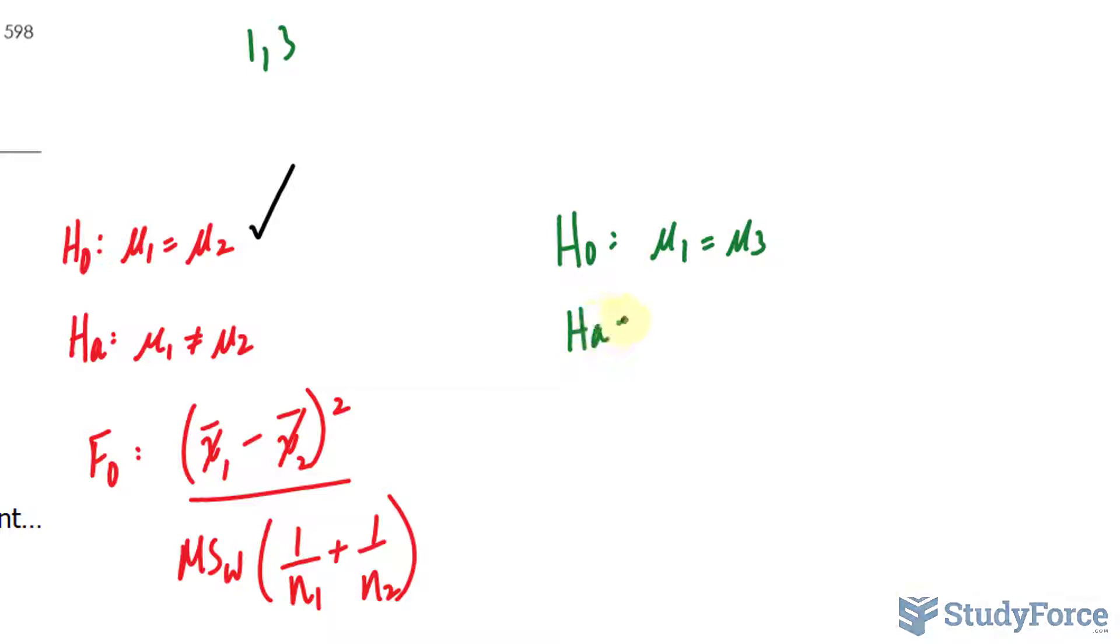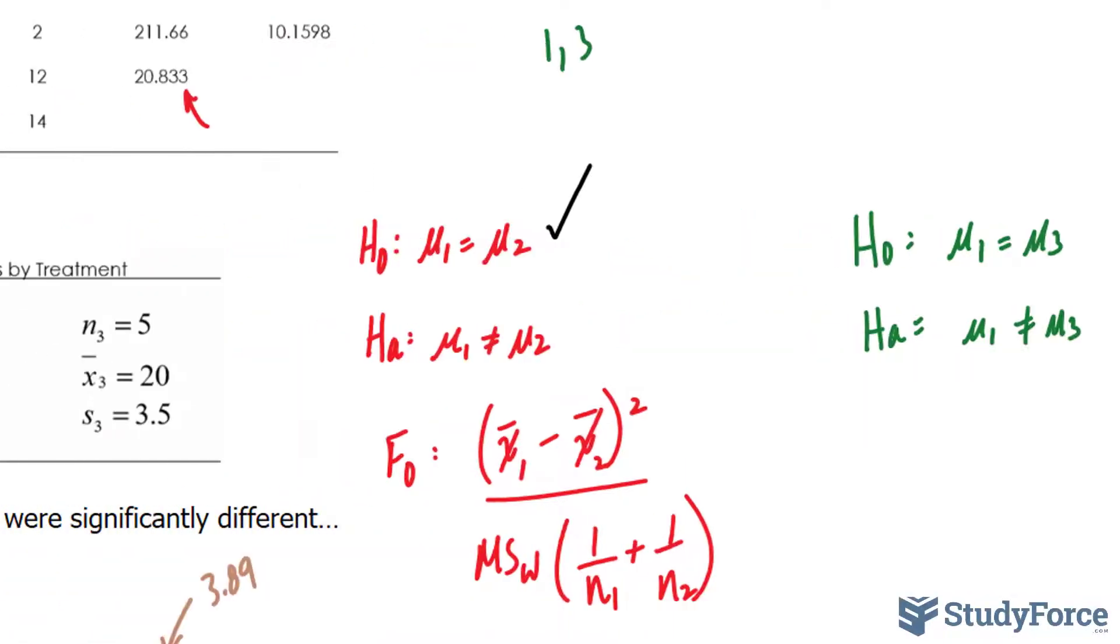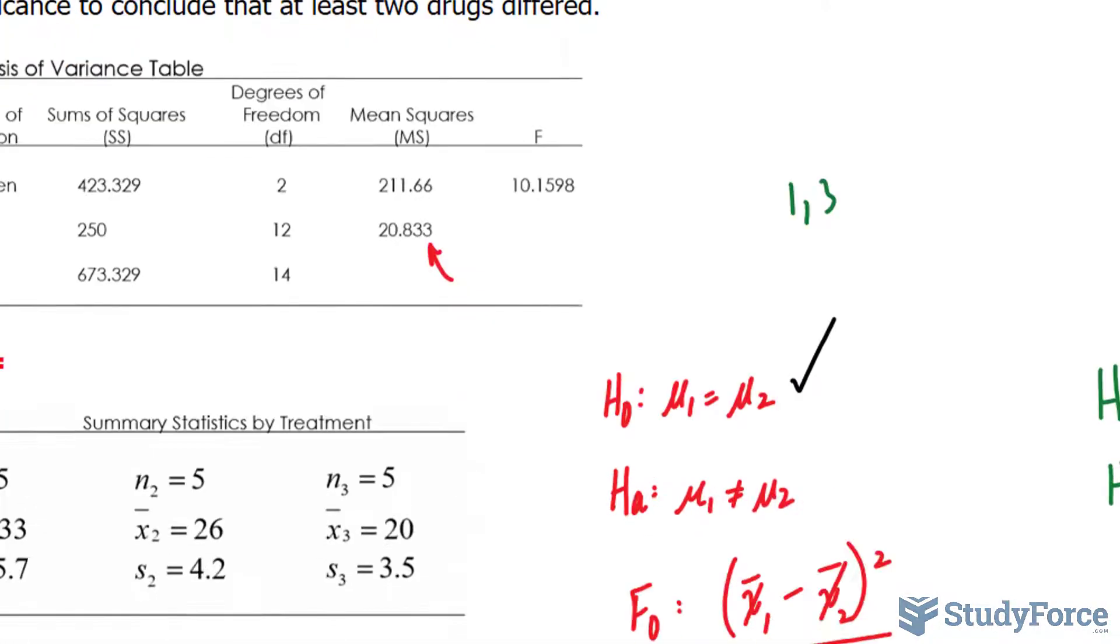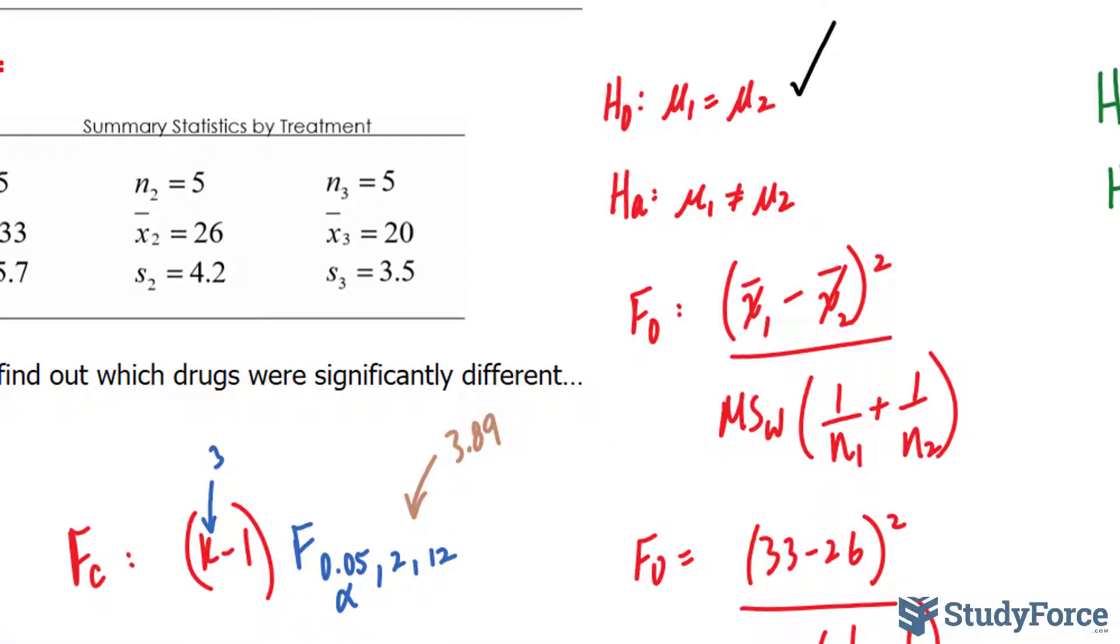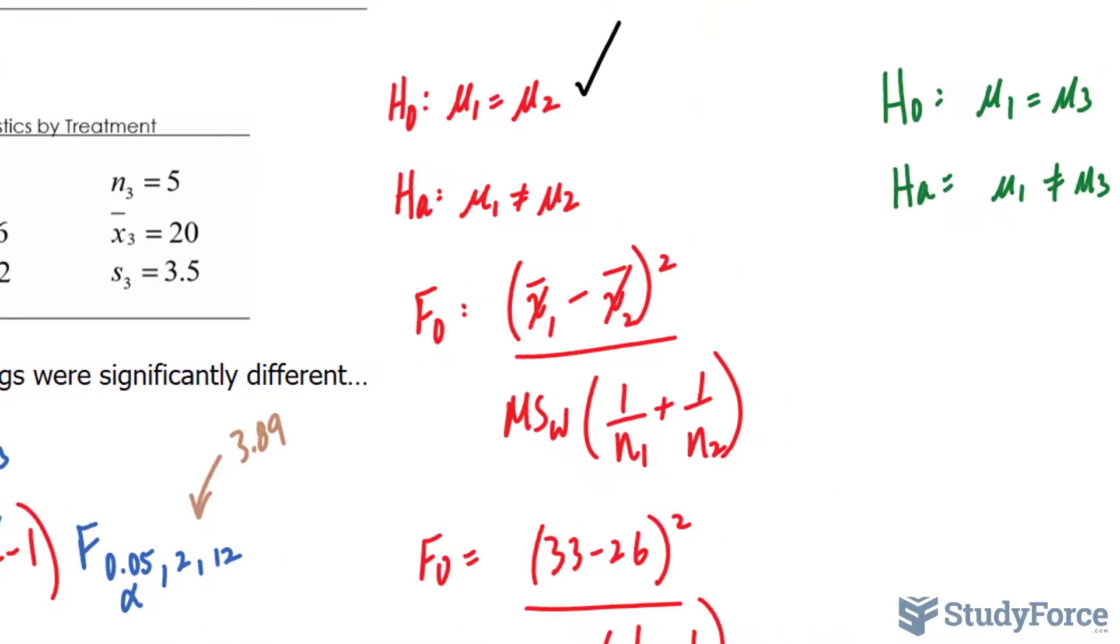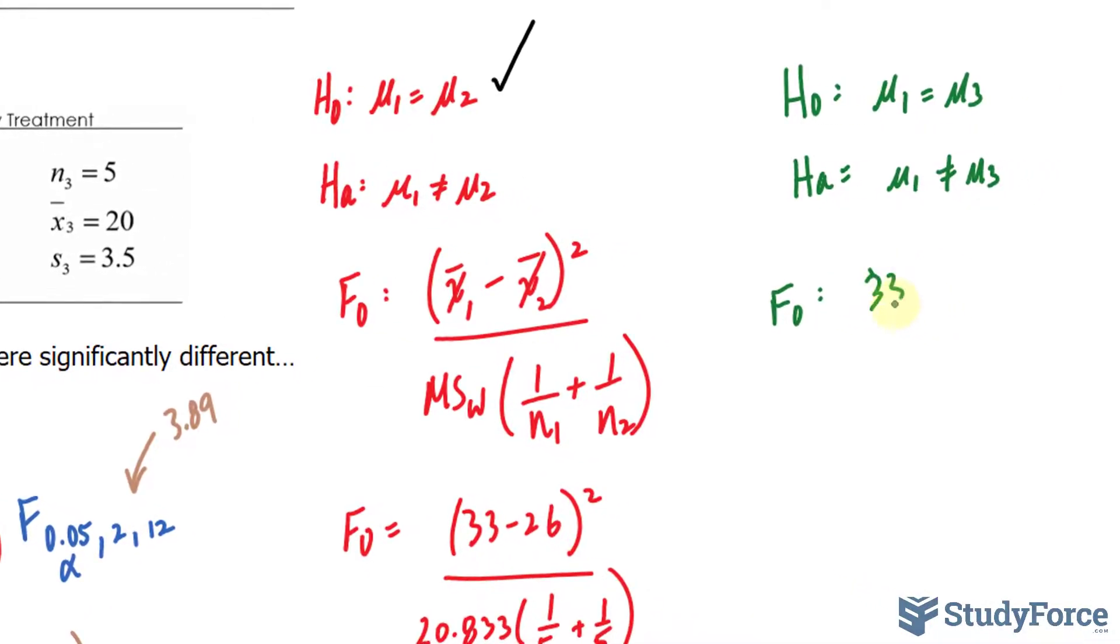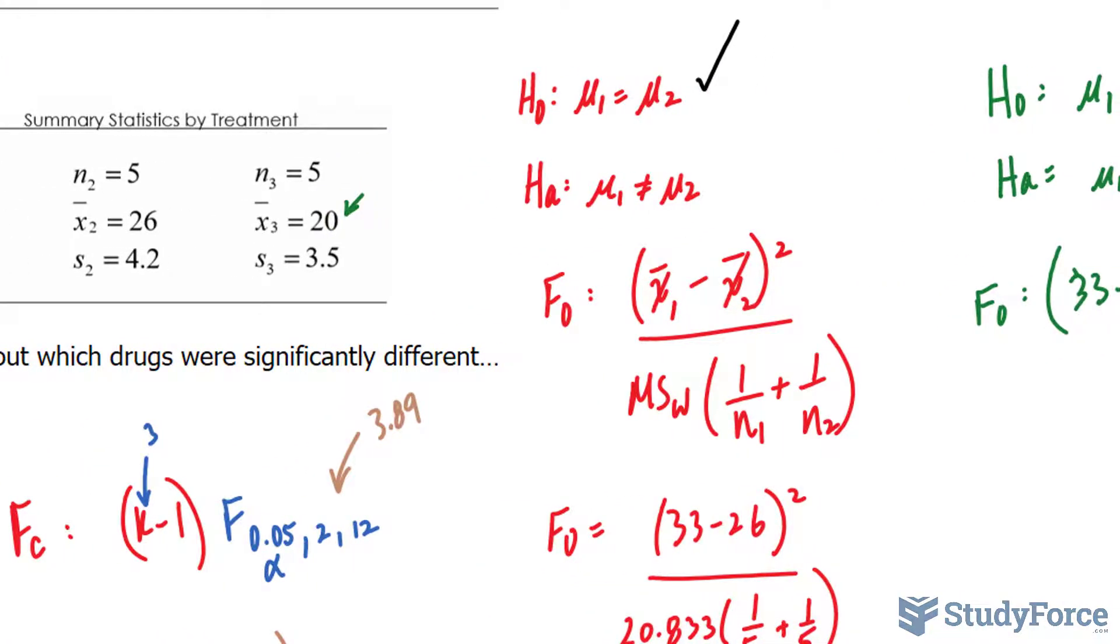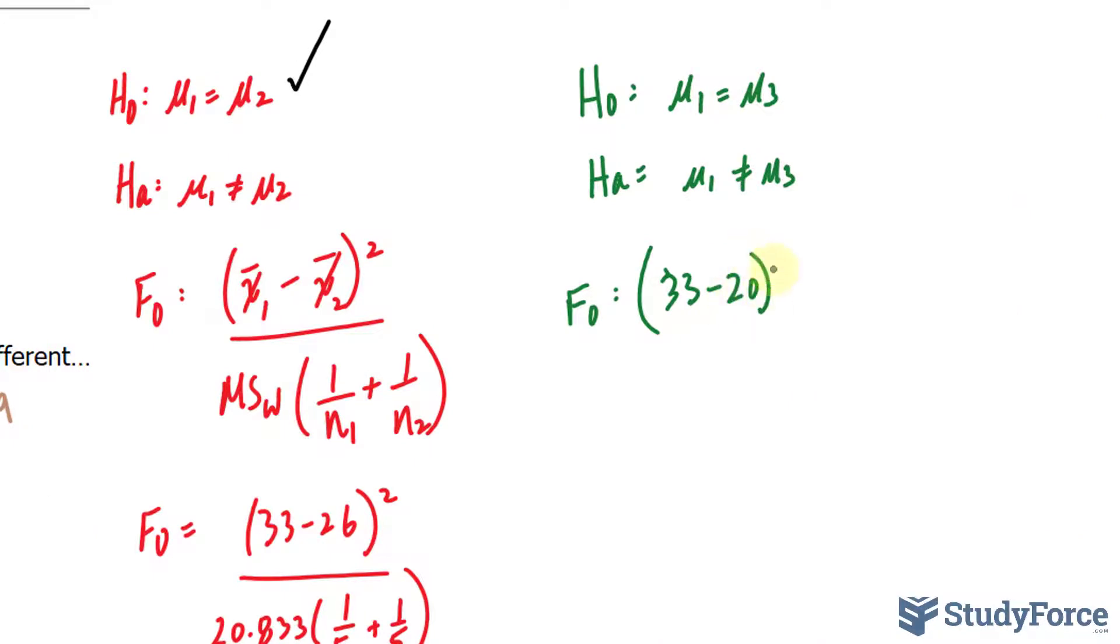The alternative is μ₁ does not equal to μ₃. We use the same formula as before, except with different numbers, obviously. Group 1 has a mean of 33, just as before, 33 minus, and here we have 20, raise that to the power of 2,